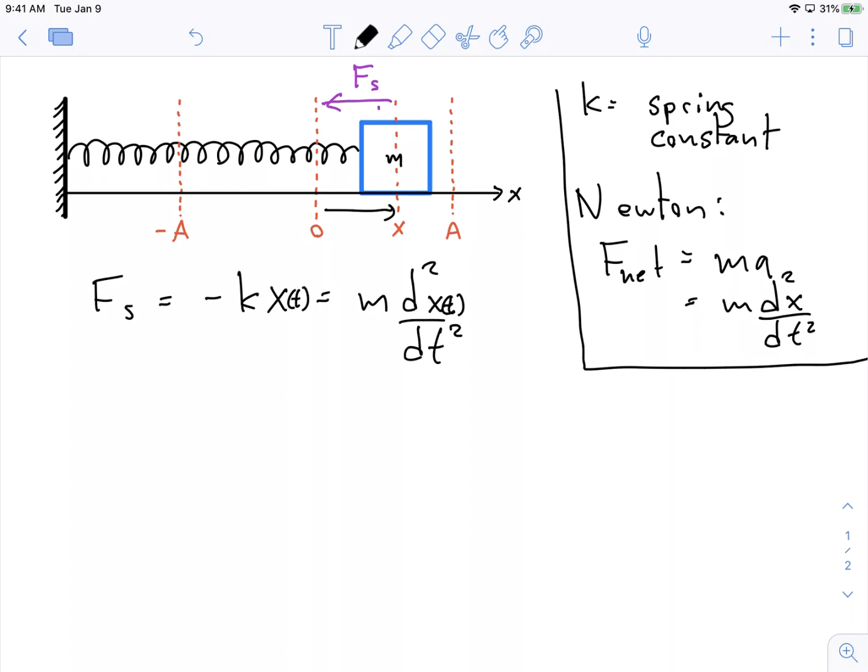Is there a function that exists where I take two derivatives of it, I multiply it by m, and I get negative k times the original function I took two derivatives of? What I would like to show you is that this function is the simple harmonic motion function. So remember, we had this for simple harmonic motion: x(t) = A cos(ωt). I'm just going to assume phi is zero, the derivation stays the same. I'm going to show this is a solution if omega has a very specific form.